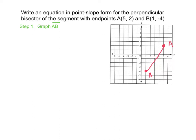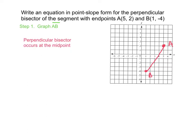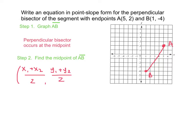Moving on to step 2: the perpendicular bisector occurs at the midpoint, because of the word bisector. So we now need to find the midpoint of AB. To find the midpoint, we will use the midpoint formula. The midpoint formula is x sub 1 plus x sub 2 over 2, and y sub 1 plus y sub 2 over 2.